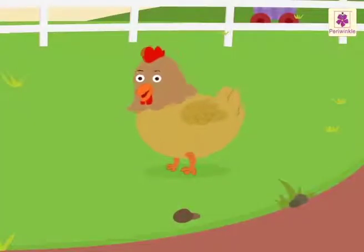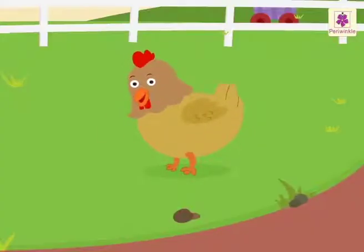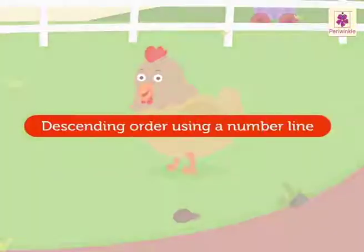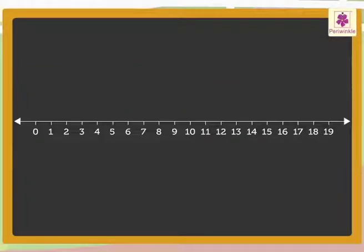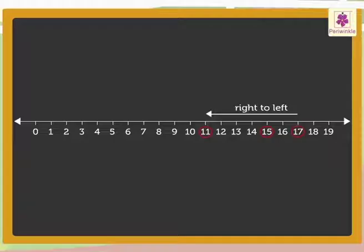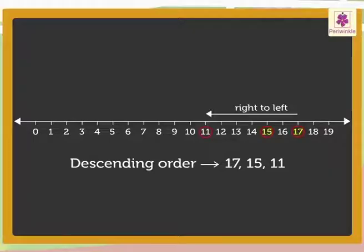Now, let us learn how to arrange the numbers 11, 17, and 15 in descending order using a number line. Look at the number line. We will begin with marking the numbers 11, 17, and 15 on the number line. Now, read from right to left to get the descending order. Hence, the descending order is 17, 15, 11.